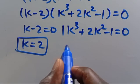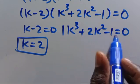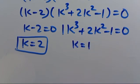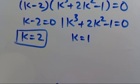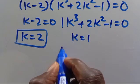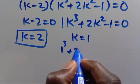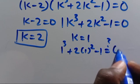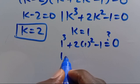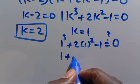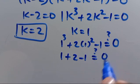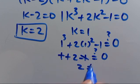For k³ + 2k² - 1 = 0, let's test k = 1: we get 1³ + 2(1²) - 1 = 1 + 2 - 1 = 2, which does not equal 0. So k = 1 is not a solution.